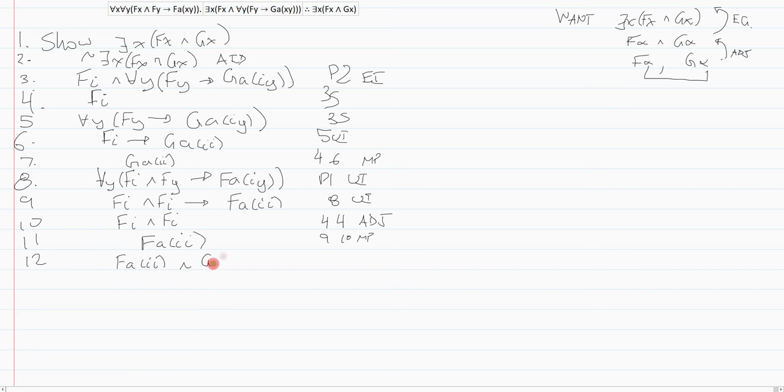I have f alpha g alpha where they're the same, so now I can build faii and I can add to that aii for g, and that is line seven eleven adjoin, and now I can existentially generalize.